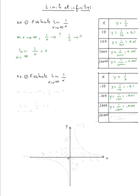Same thing for negative ten thousand: y equals one over negative ten thousand, which is negative 0.0001. So the y values are approaching zero. The only difference between Example 1 and Example 2 is they are approaching zero from the left side — but it's still approaching zero. So we can say the limit of one over x as x approaches negative infinity is equal to zero.